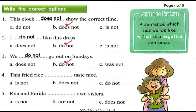The answer is: this fried rice does not taste nice — here everything is given in negative. Rita and Farida dash own sisters — the correct answer is: Rita and Farida are not own sisters. I hope everyone has written the correct answers in the blank. Please write neatly, and in case you miss out, you can pause or re-watch the video.